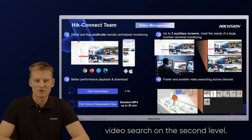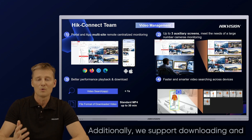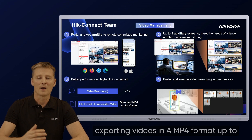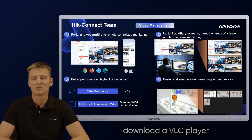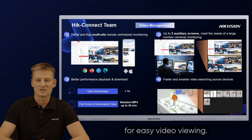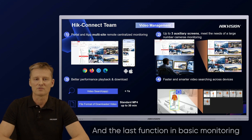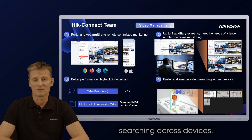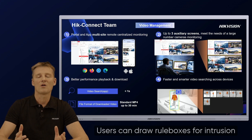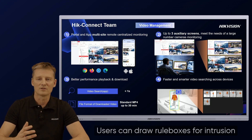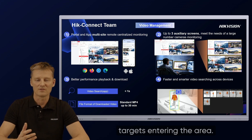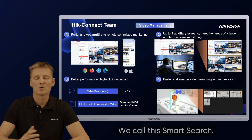HiConnect app supports video search at the second level. Additionally, we support downloading and exporting videos in MPV format up to 30 minutes, eliminating the need to download a VLC player for easy video viewing. Another function in basic monitoring worth highlighting is faster and smarter video searching across devices. Users can draw rule boxes for intrusion lines at the location of an event to quickly filter and easily identify targets entering the area. We call this smart search.